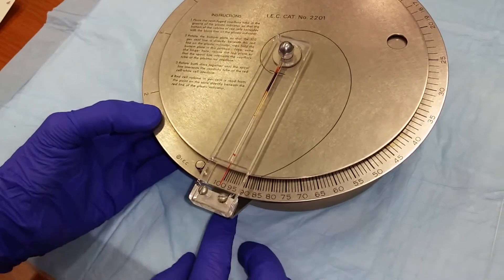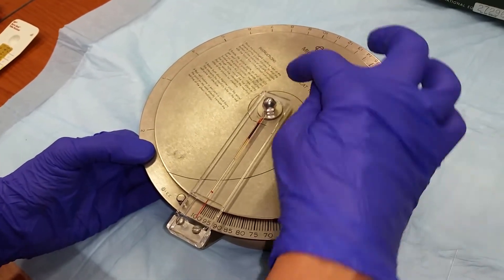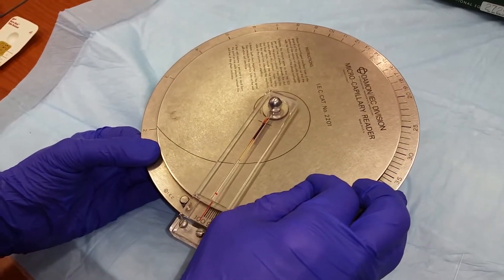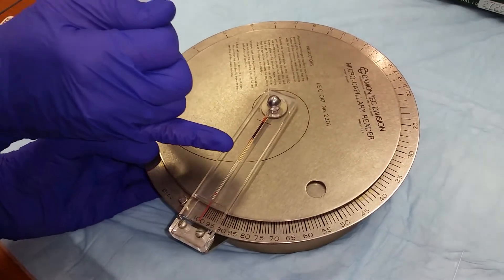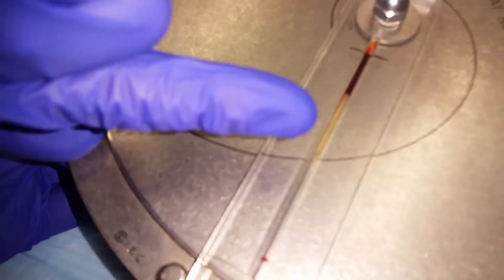Holding the bottom plate in place, you are going to move the top plate until the spiral line meets the top of the column of plasma, of the column of blood at the top where the plasma is.